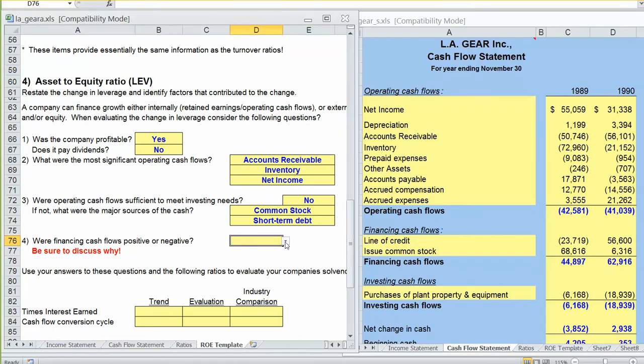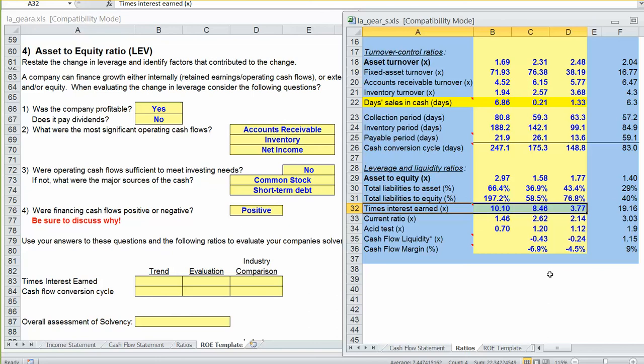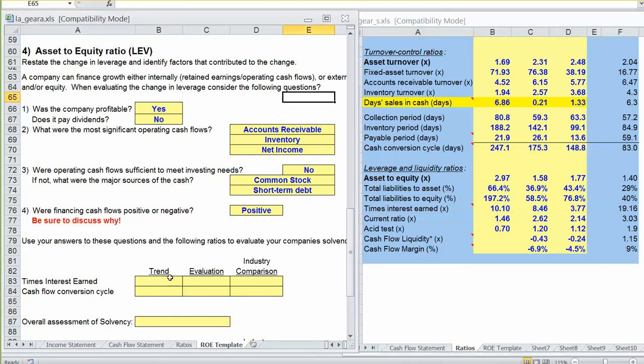So continuing on with our template, financing cash flows were positive. We are raising money from investors. So you need to sort of take these things into account for why our financial leverage has changed. Our times interest earned ratio has decreased from a solvency or liquidity perspective. It's certainly worse compared to the industry average. On average, the industry has $19 in earnings for every dollar in interest. We only have $3 in earnings for every dollar in interest.